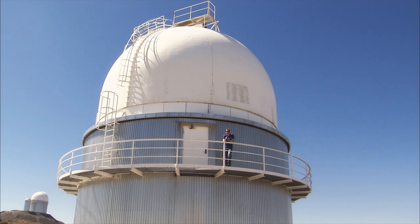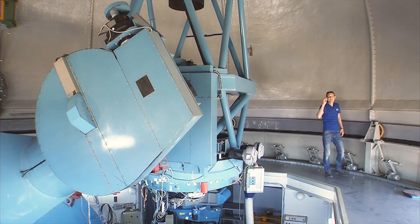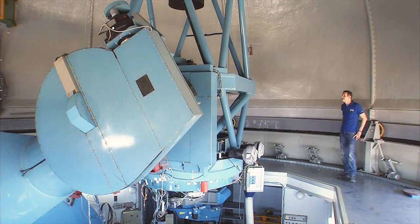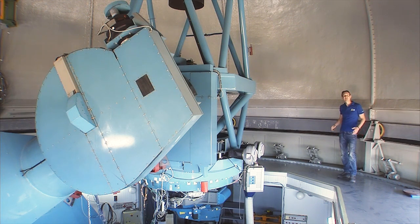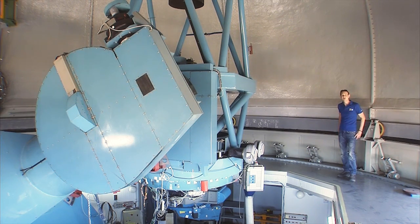But there are other ways to find exoplanets. In 2006, the 1.5-metre Danish telescope helped to discover a distant planet that is just five times more massive than the Earth.